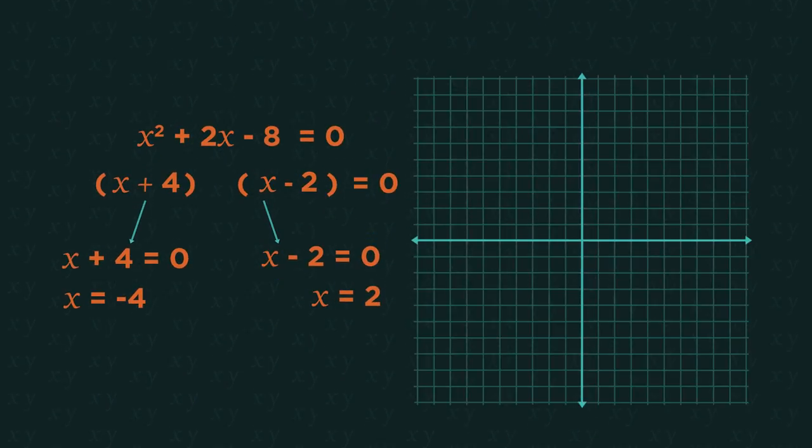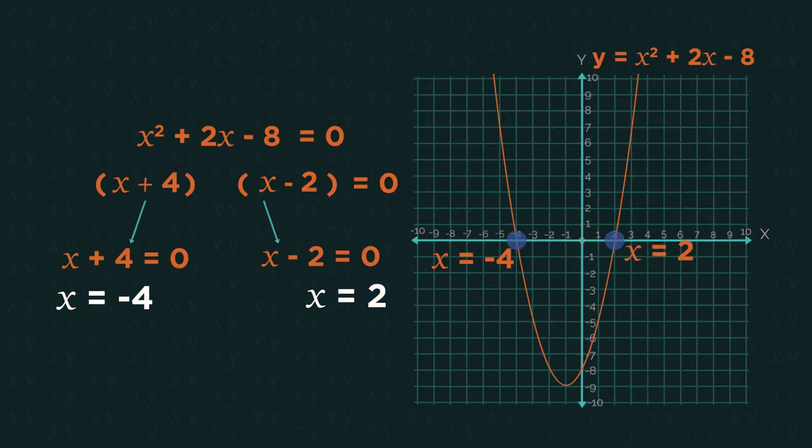If we plotted this quadratic, these roots are where the curve crosses the x-axis. At negative 4 and at 2.